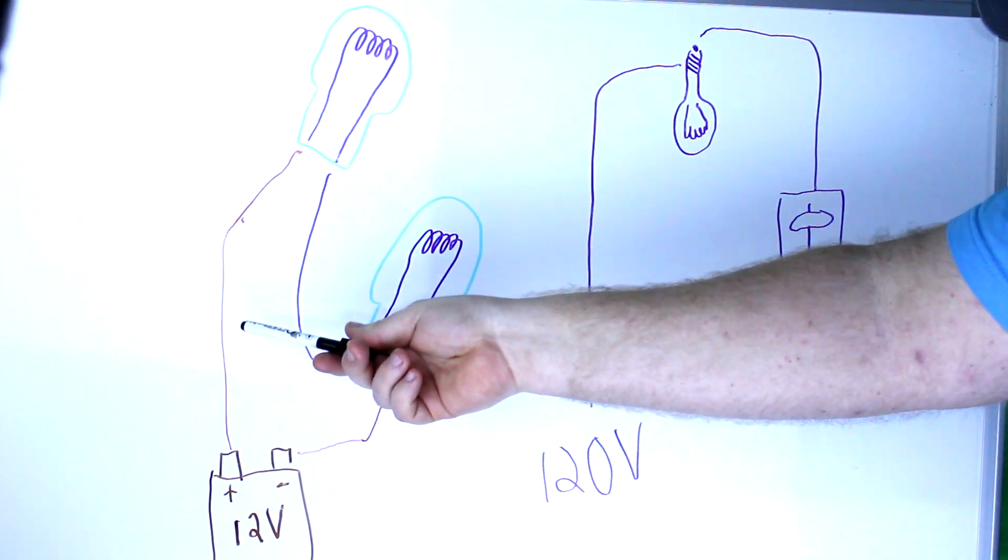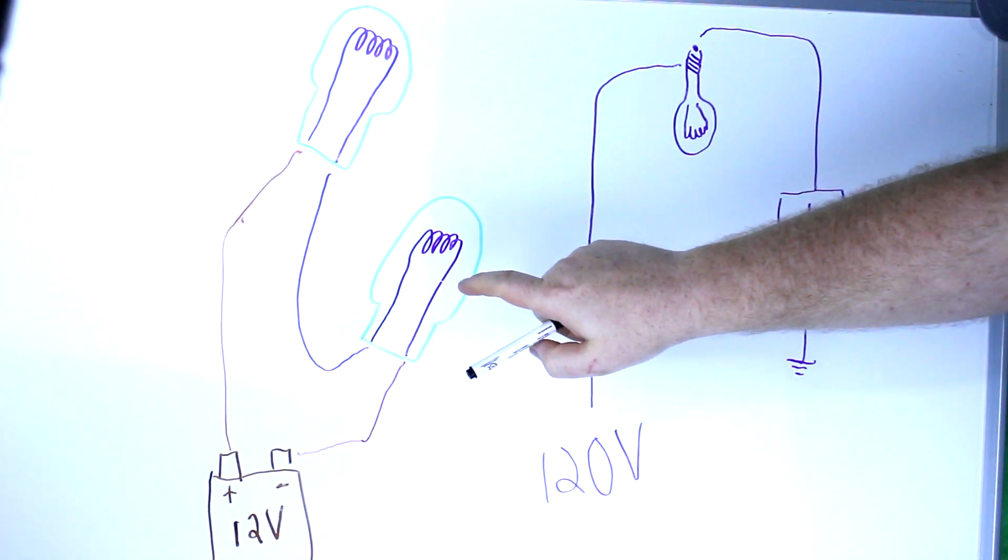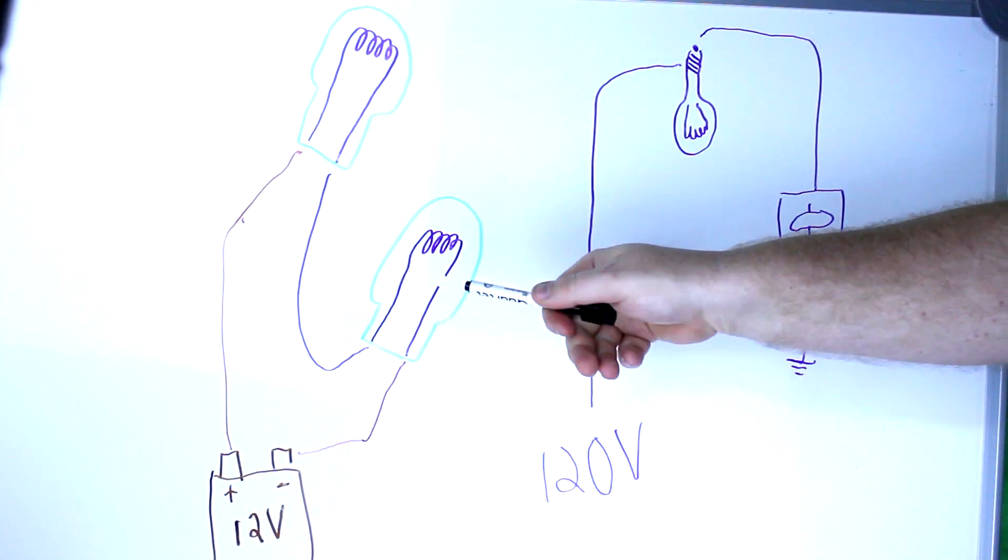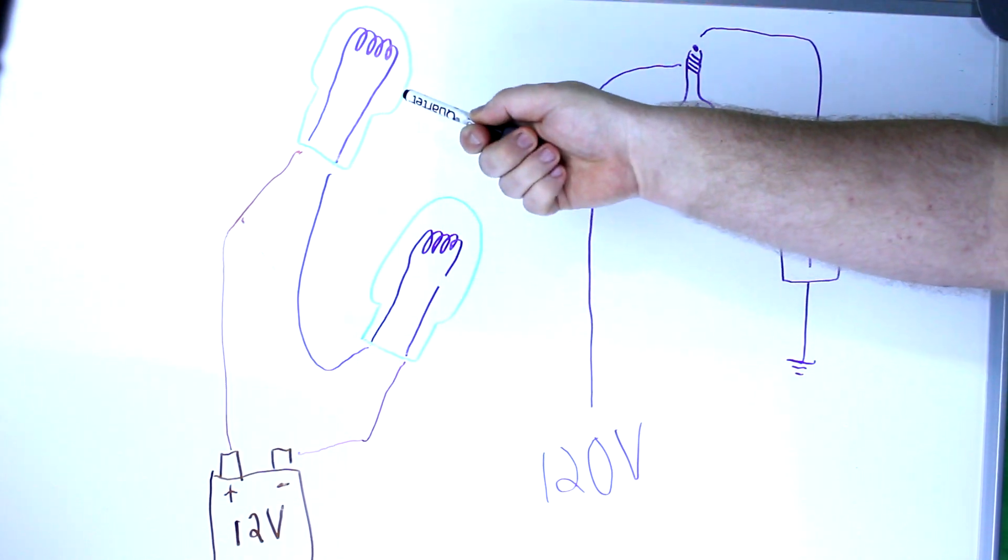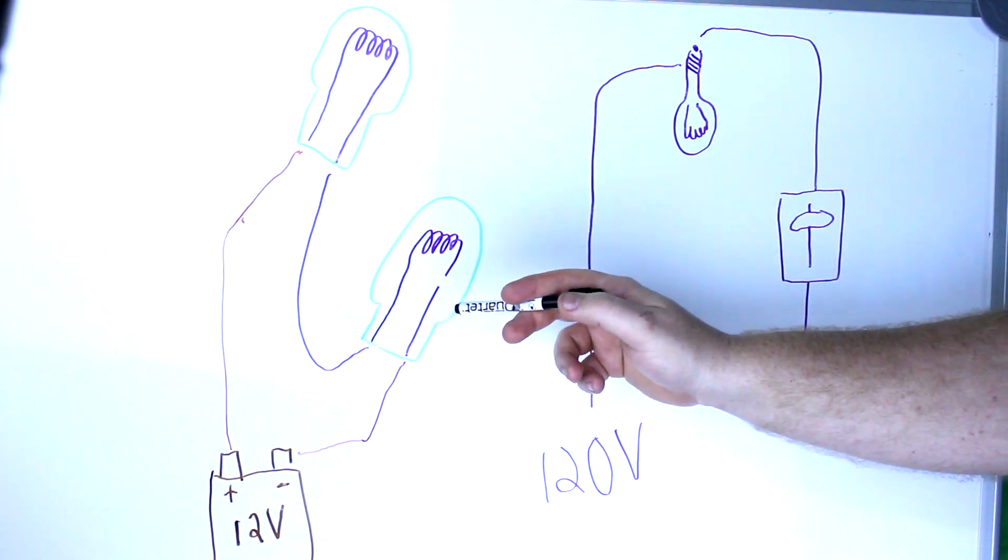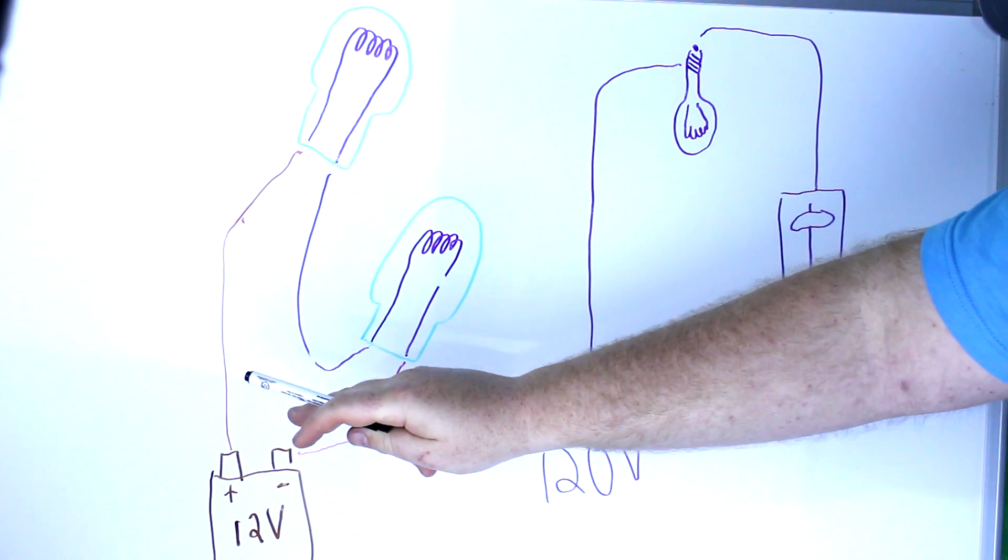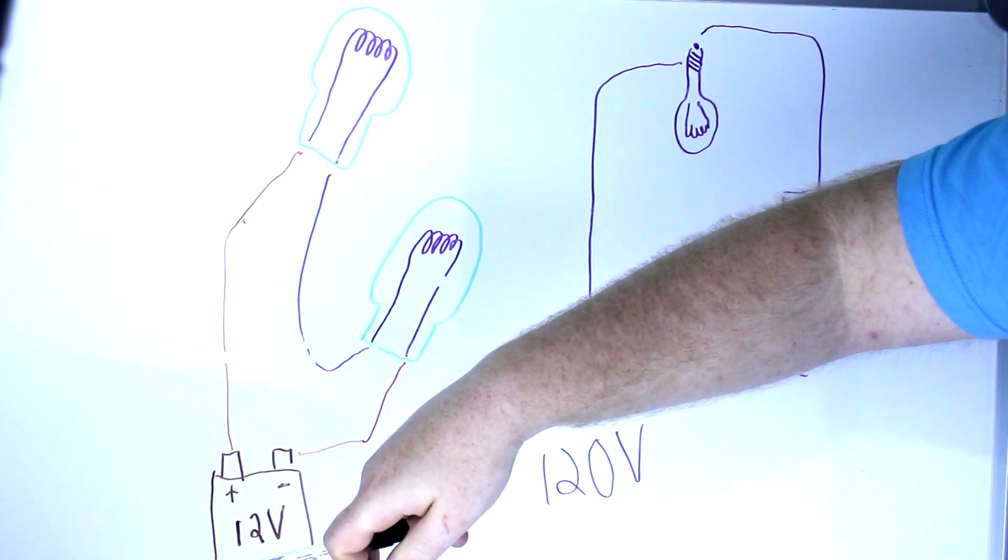But also take note that there's only one path through both of these bulbs. If this bulb burns out, there's no power that can flow through that, and that means nothing's powering this bulb either. While this is less likely to happen now, because these are both producing less heat, something can still happen elsewhere that will make you lose power to both of your bulbs.